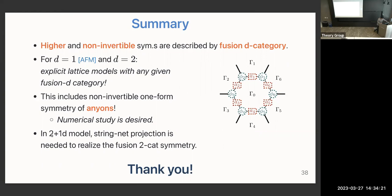In summary: higher and non-invertible symmetries are described by fusion D-categories in D+1 dimensions. For D=1 we have the anyon chain, and for D=2 we have our explicit model. In D+1=3 dimensions, this includes the non-invertible one-form symmetry governing anyons. It will be very interesting to do numerical study of these models to see whether they actually realize topological orders. Thank you.